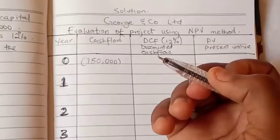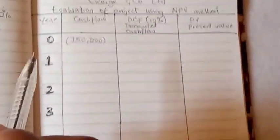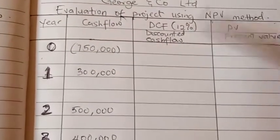For year zero, the cash flow was 750,000. Now I'm done filling it up. We are going into calculating the discounted cash flow.